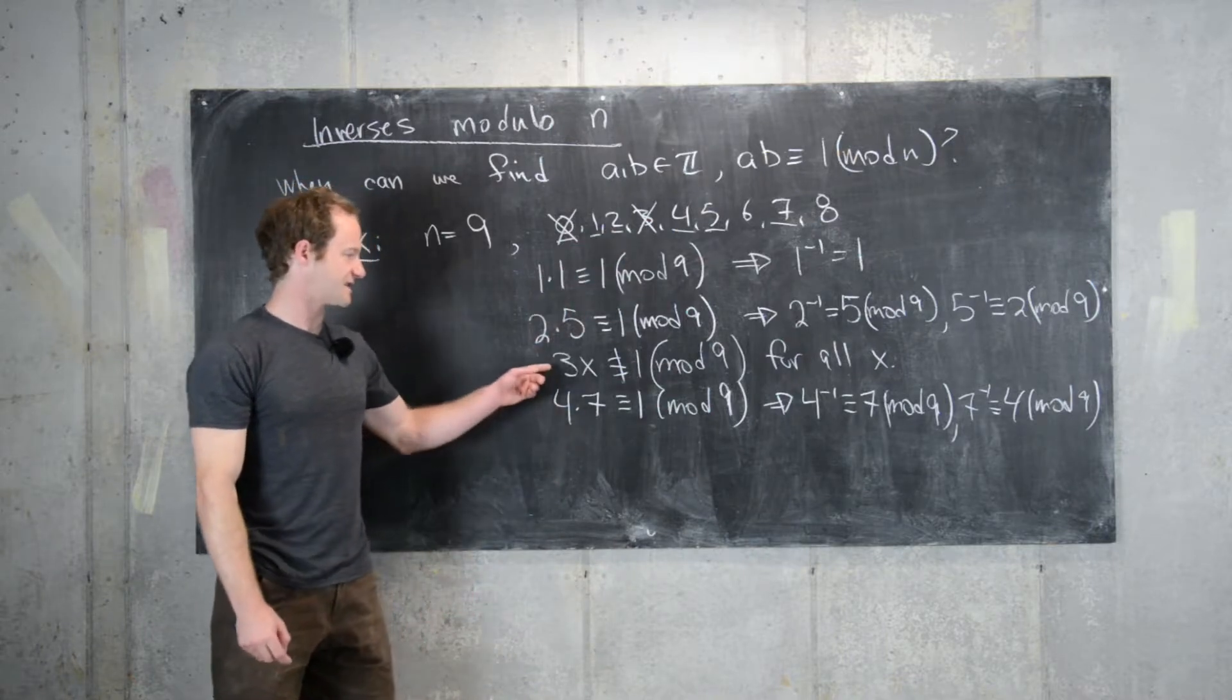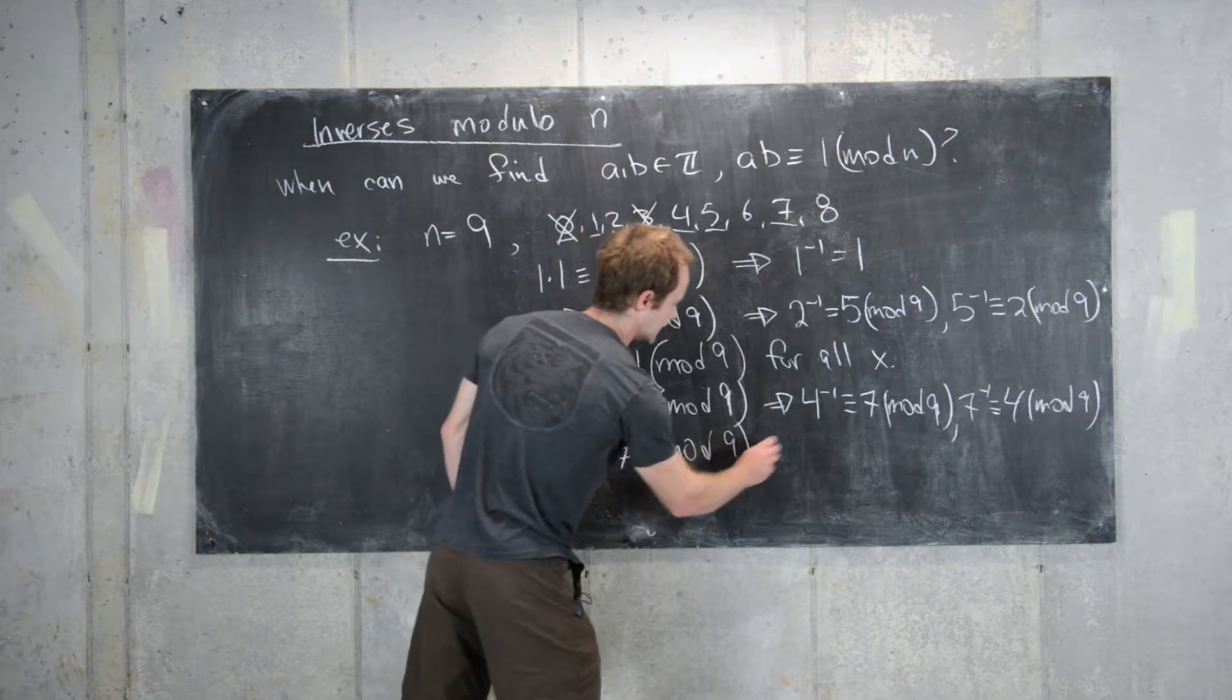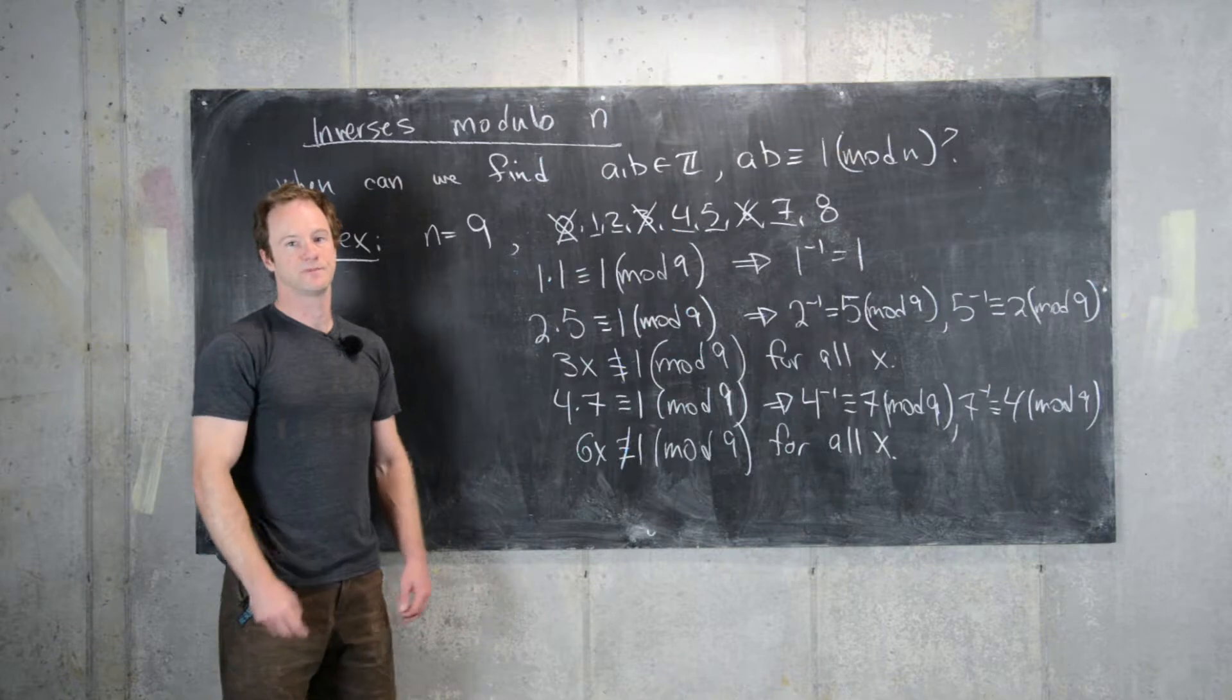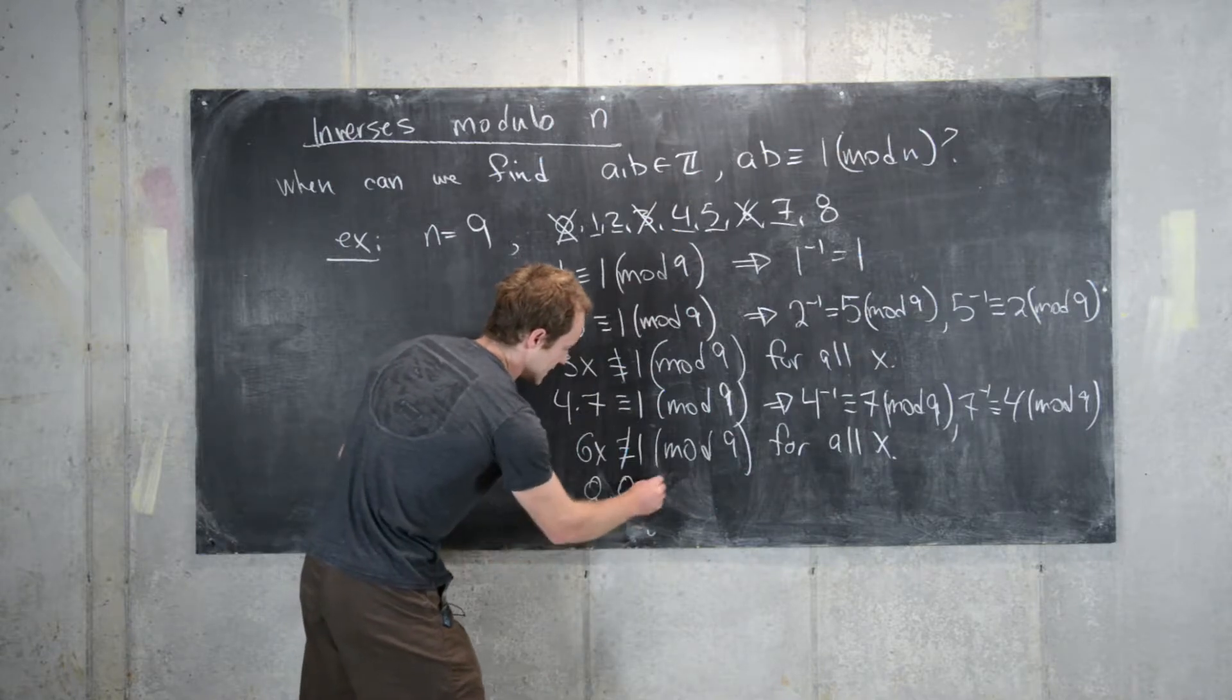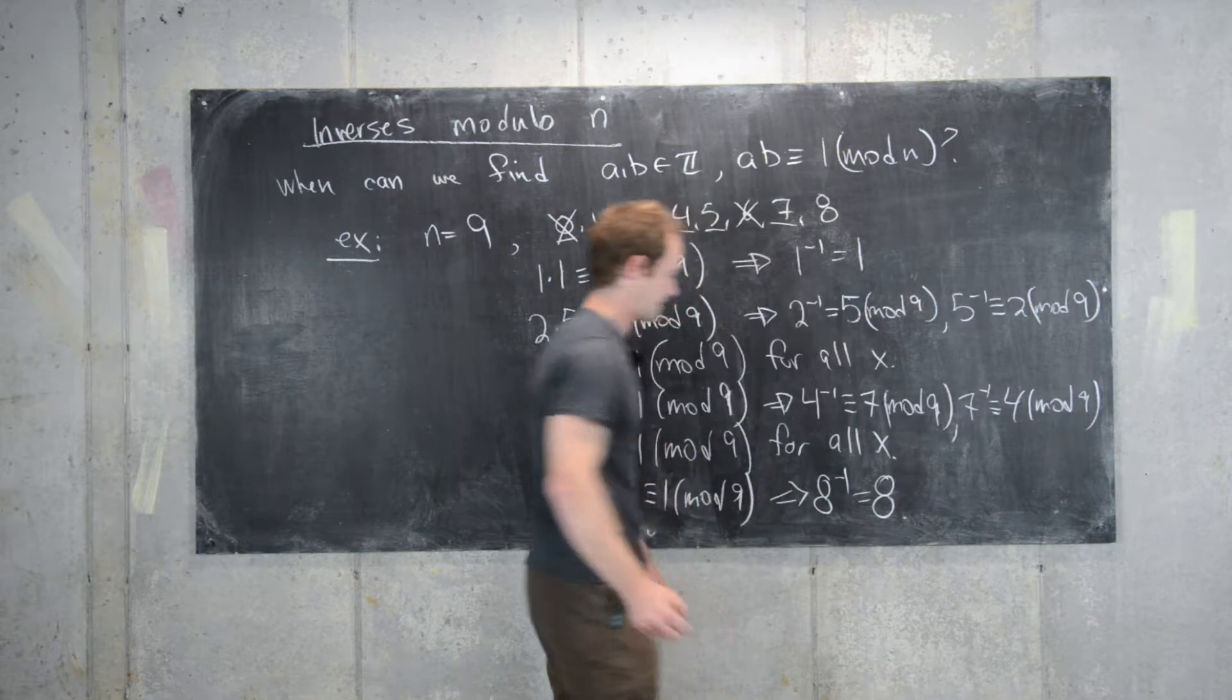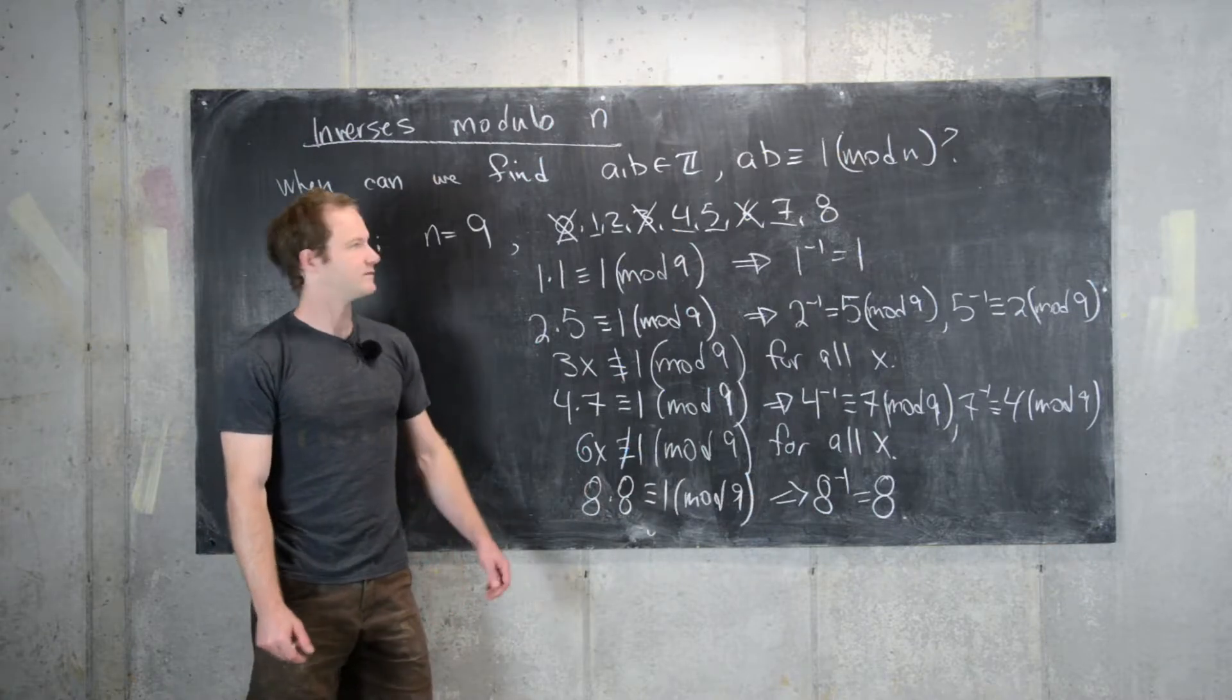Now, you can play around with 6 the same way that we played around with 3. And you'll notice that 6x is not congruent to 1 mod 9 for all x. So you can't even get off the ground there. So 6 does not have an inverse. And now if we look at 8, 8 times 8 is 64, which is 1 more than 63. So that means 8 times 8 is congruent to 1 mod 9. In other words, 8 inverse is 8. Which makes a lot of sense because modulo 9, 8 is equal to minus 1. And obviously minus 1 times minus 1 is 1.